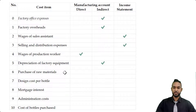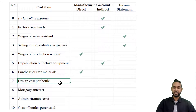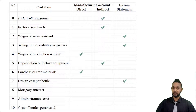Then we have purchases of raw materials — that is definitely factory and definitely direct. Now we have design cost per bottle. There was a bit of debate on this in class, but ultimately, after looking up some sources online and in a couple of textbooks, we decided to classify this as an income statement item — it's not manufacturing-related, so income statement.